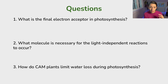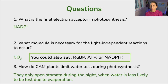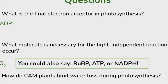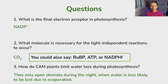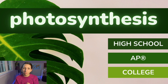Now that is a lot of information, so let's do a few quick review questions before we wrap up. The final electron acceptor in photosynthesis is NADP+, to form NADPH. What molecule is necessary for the light-independent reactions? Carbon dioxide. And how do CAM plants limit water loss during photosynthesis? They only open stomata during the night when water is less likely to be lost due to evaporation. I hope this review of high school, AP, and college-level photosynthesis has been helpful for you. Let me know in the comments below if you like this content, give this video a like if it's been helpful, and I'll see you later.